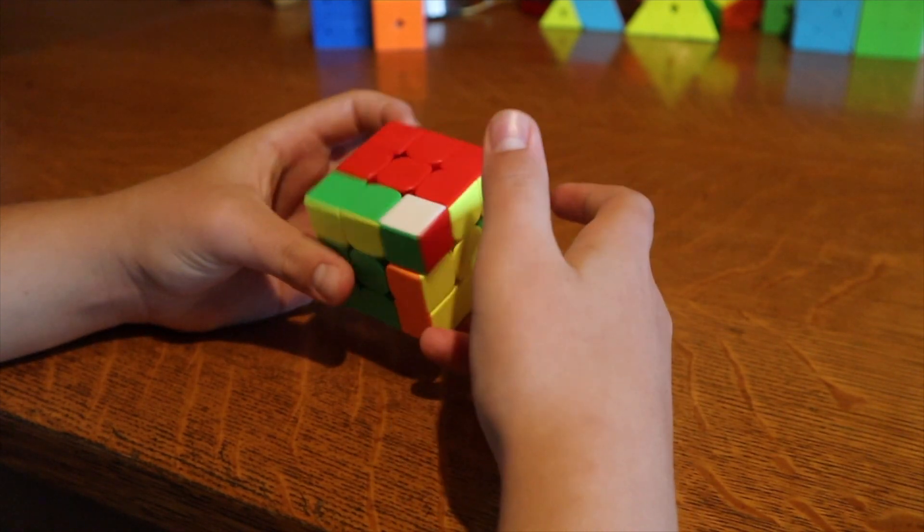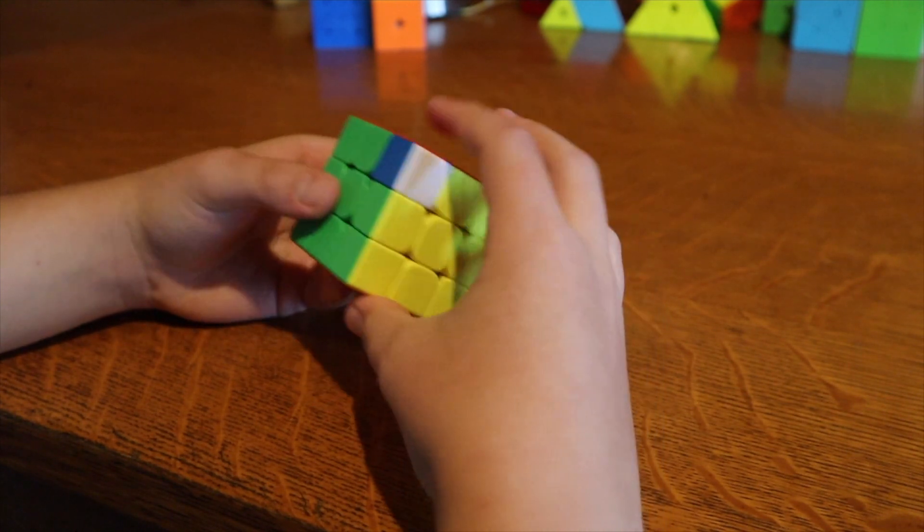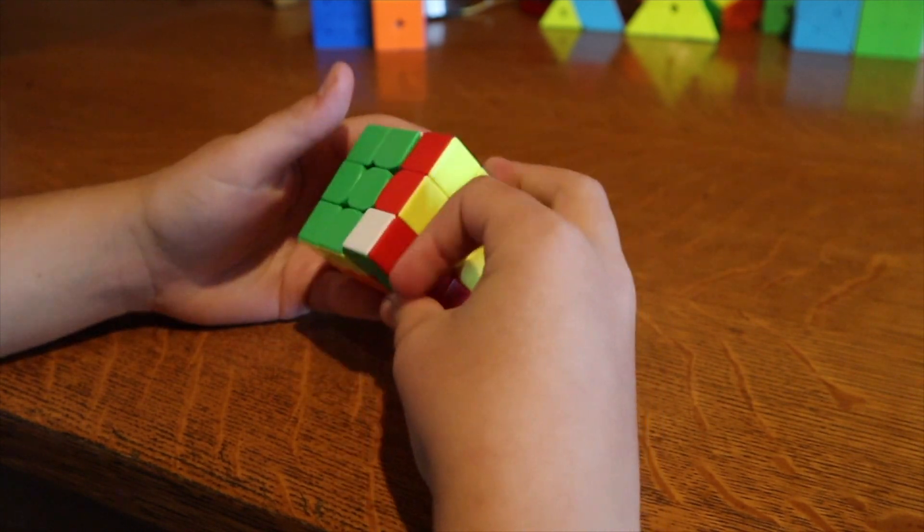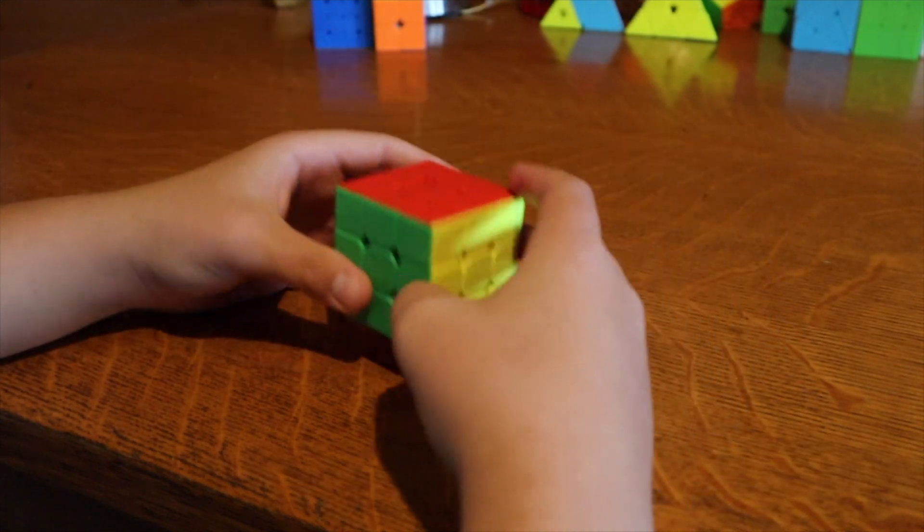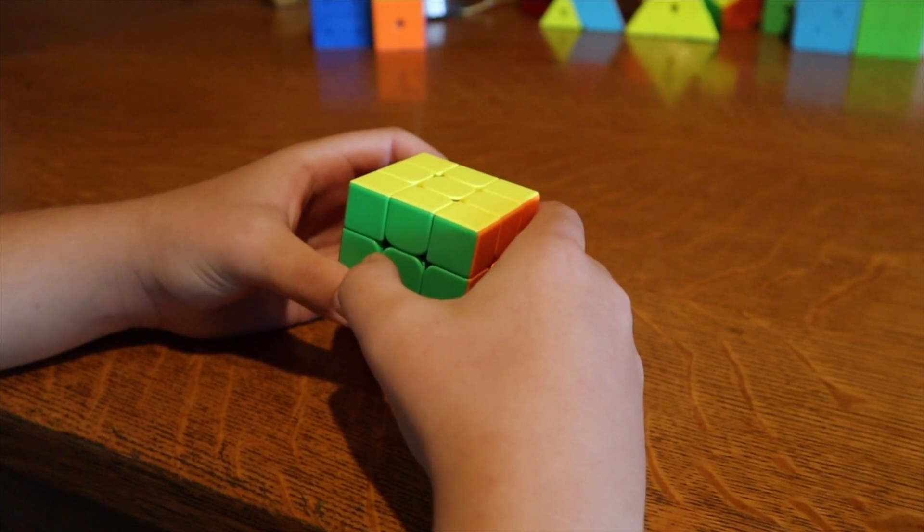And then I did two look OLL, and then U move, and a Y perm with no AUF. So that was my 12.73 solution.